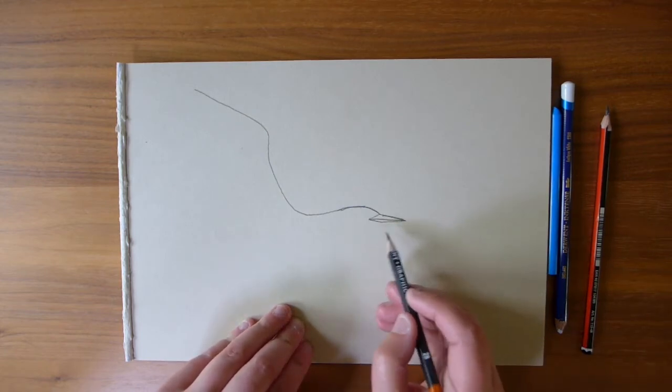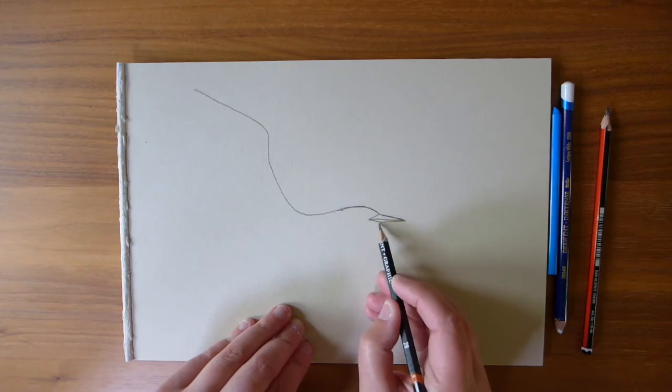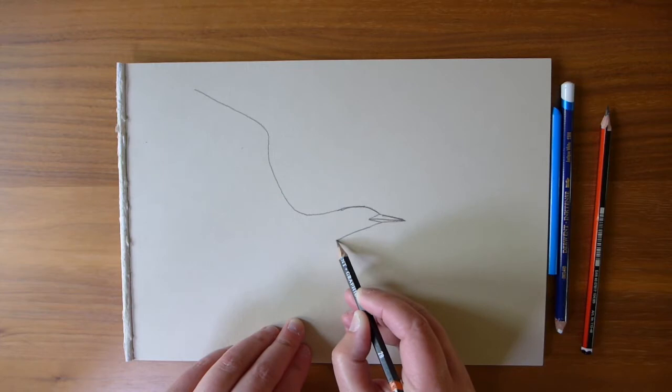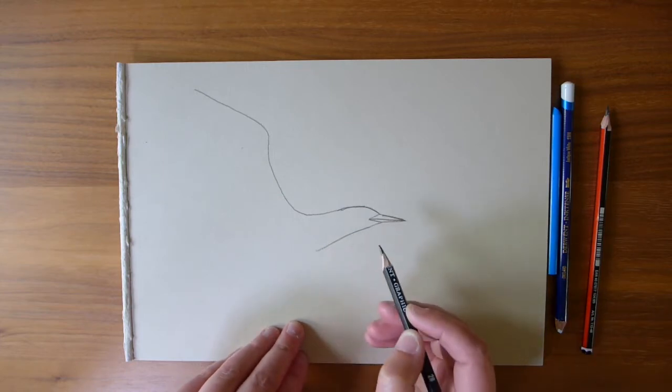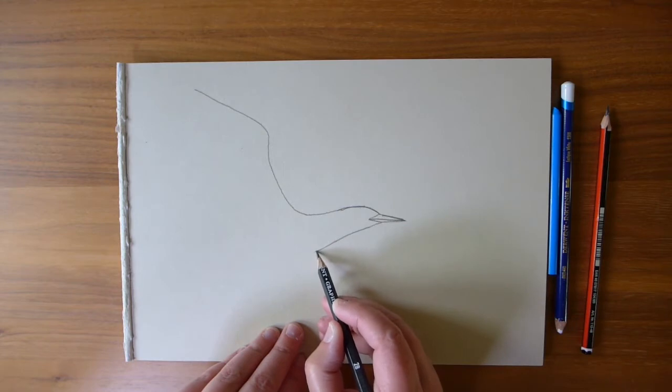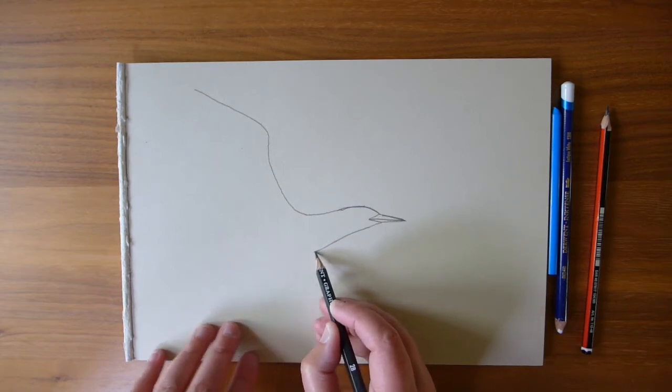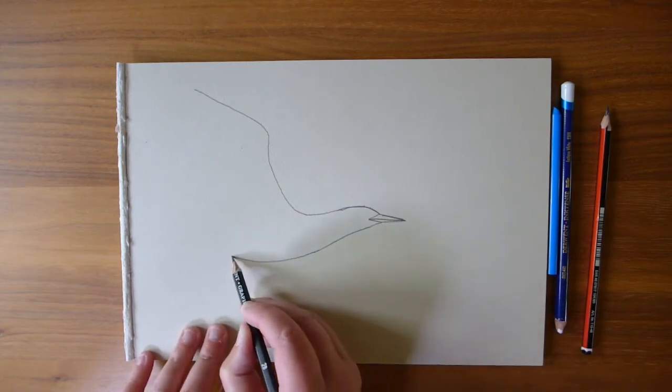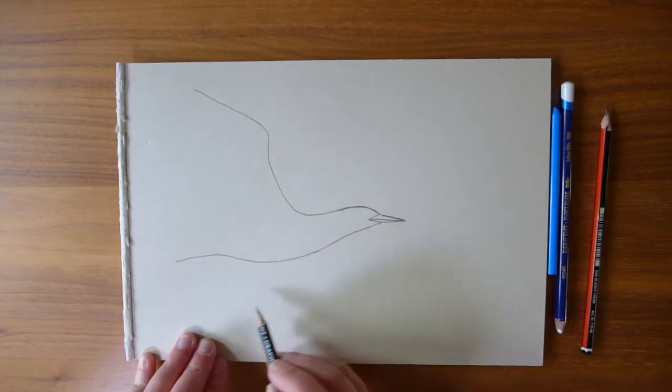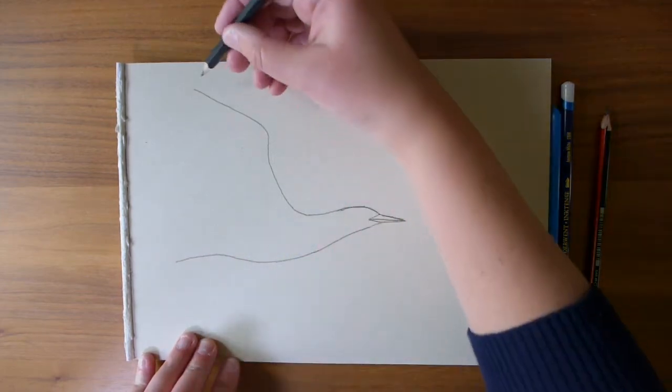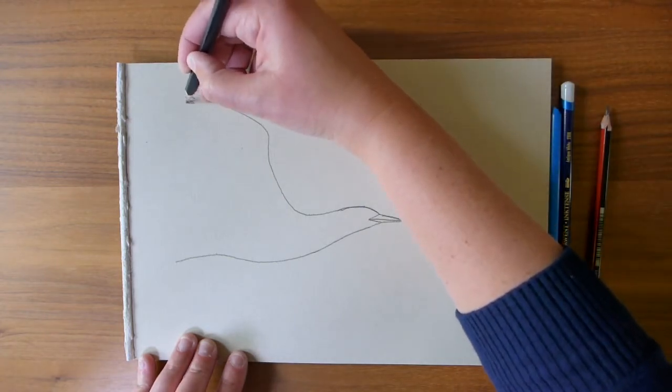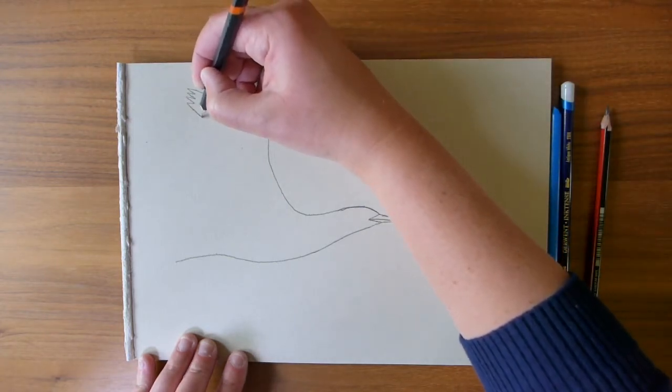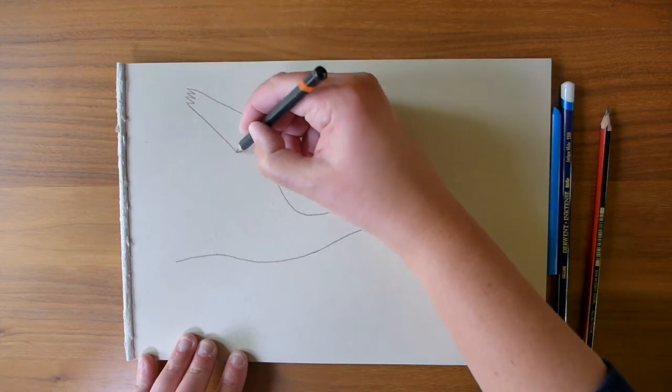So now we're going to take a line from the bottom of the beak and put in the bottom part of our gannet and then bring the line all the way under like this and back towards the tail feathers that's our bird's belly and then just put in the wing tips up here and then bring the wing down the way and back towards the body.